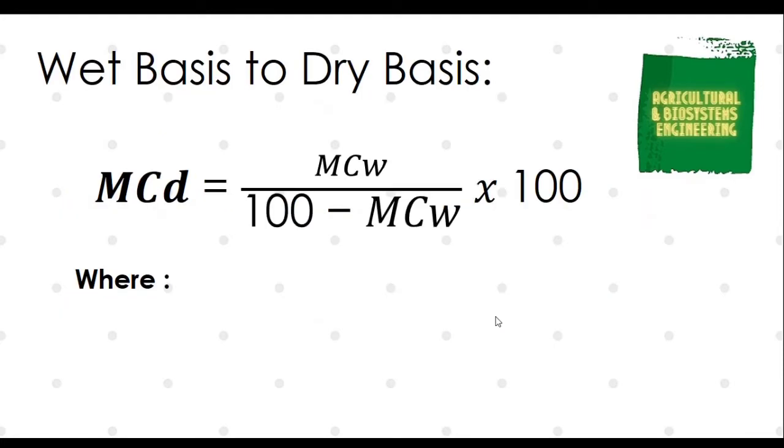The formula to solve for Moisture Content Wet Basis to Dry Basis is: MCD is equal to MCW all over 100 minus MCW, multiplied to 100.